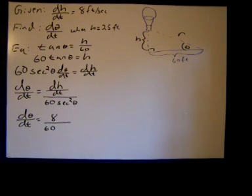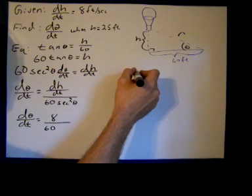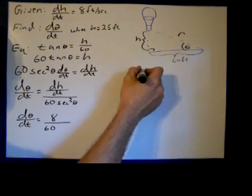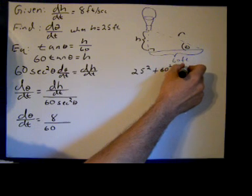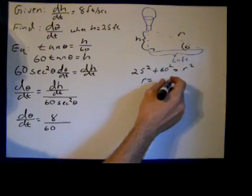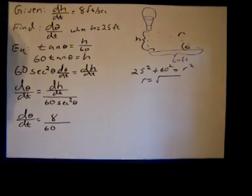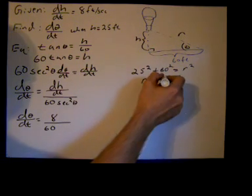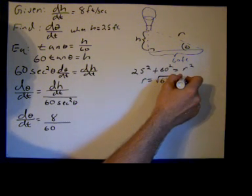Usually we label things and we don't always use them, but in this case we are going to use that. With the Pythagorean theorem, when h is 25, we're going to have 25 squared plus 60 squared equals r squared. So r will equal the square root of 25 squared plus 60 squared.